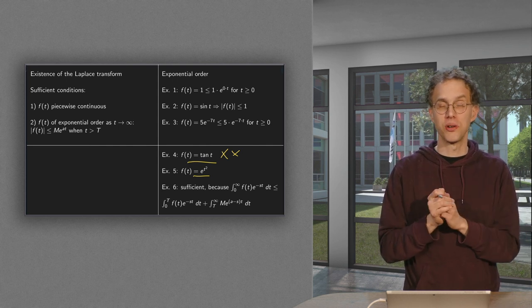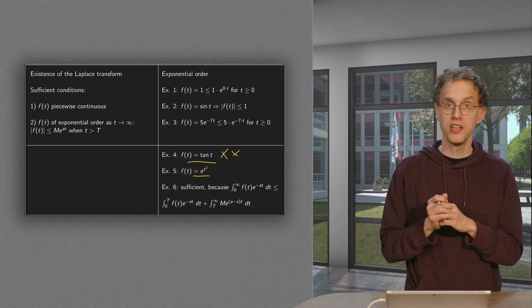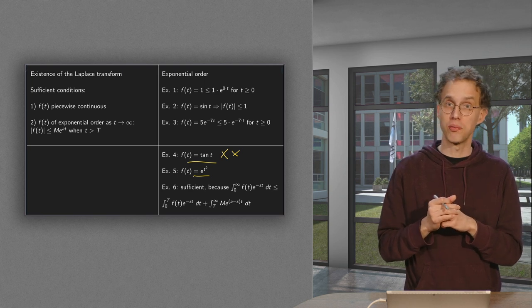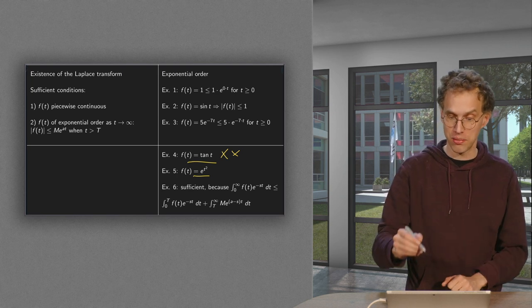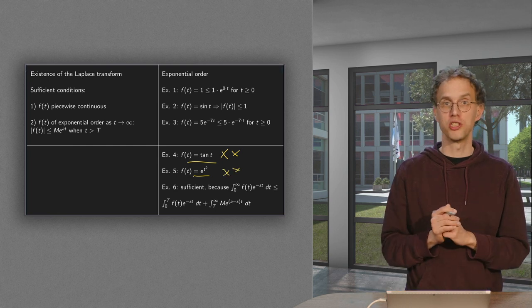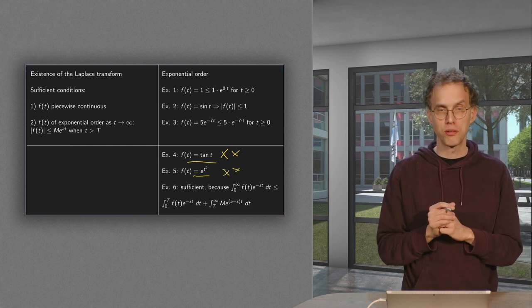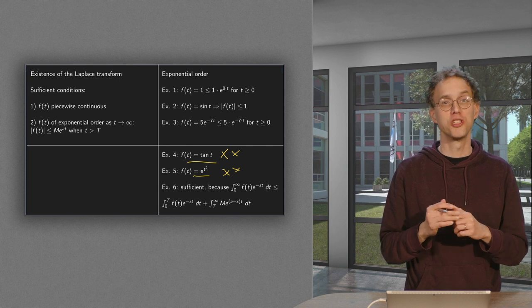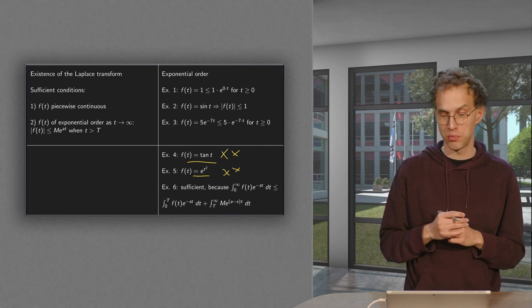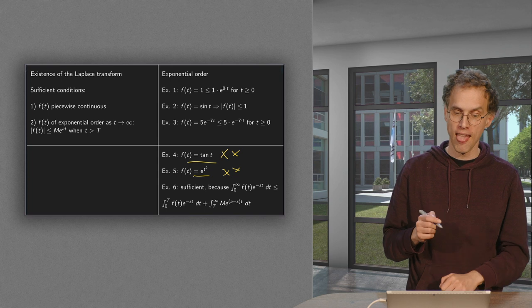So you cannot get your t squared below a times t, which means that you cannot get your e to the power t squared below e to the power a times t. So this is also not of exponential order. But okay, we had to pick really nasty functions to be able to get something not of exponential order.